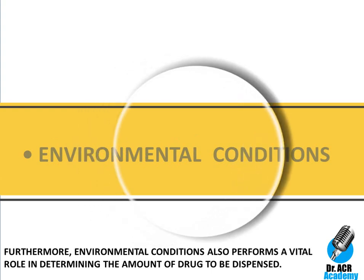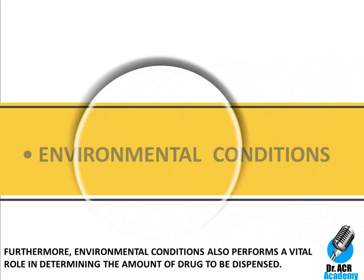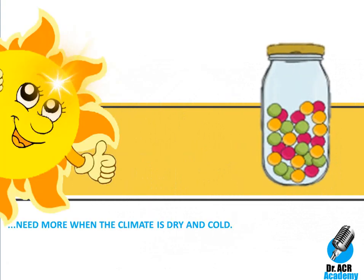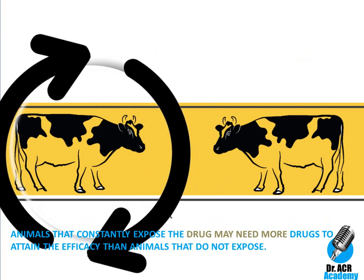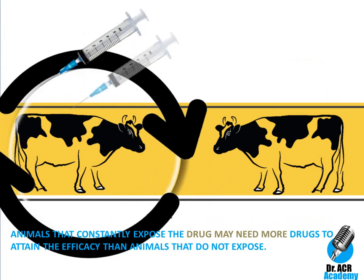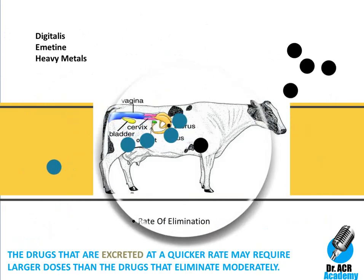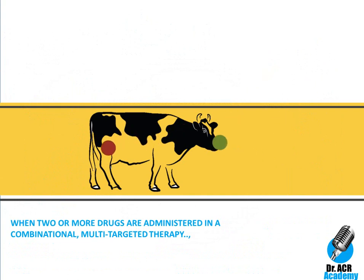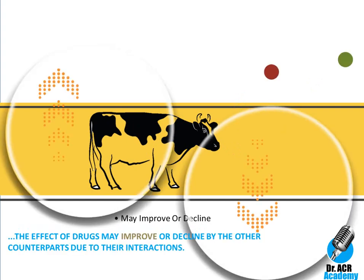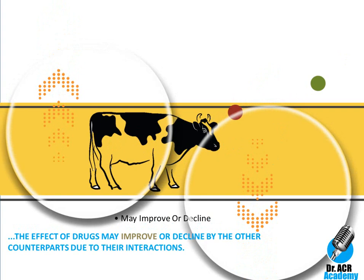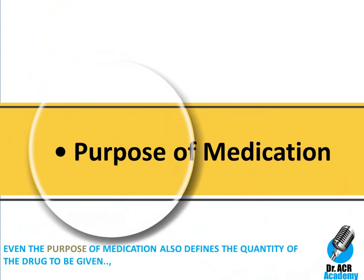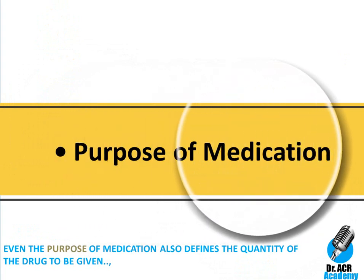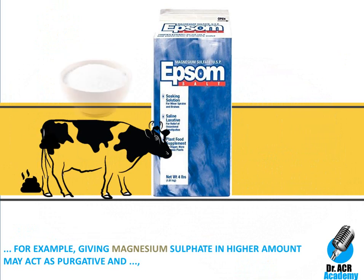Environmental conditions also play a vital role in determining the amount of drug to be dispensed. For instance, less dose is required under cool and humid climate, and more is needed when the climate is dry and cold. Animals that are constantly exposed to a drug may need more of it to attain efficacy. Drugs that are excreted at a quicker rate may require larger doses than drugs that eliminate moderately. When two or more drugs are administered in combination, the effect may improve or decline due to interactions. Even the purpose of medication defines the quantity — for example, giving magnesium sulfate in higher amounts may act as a purgative.